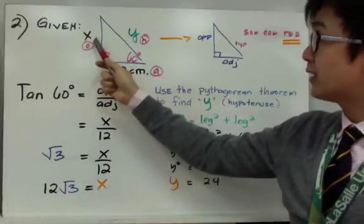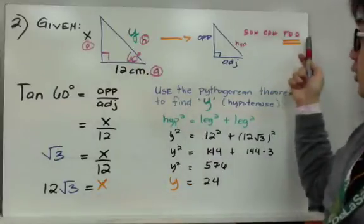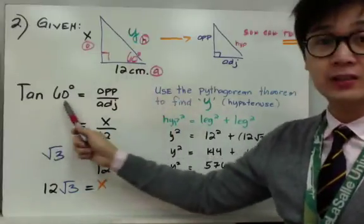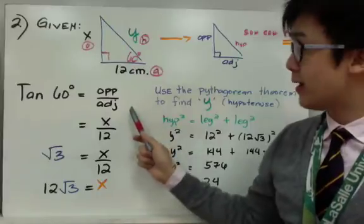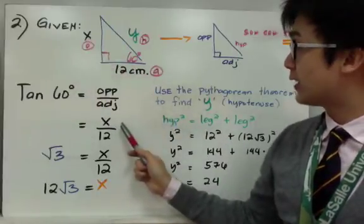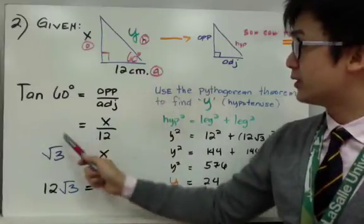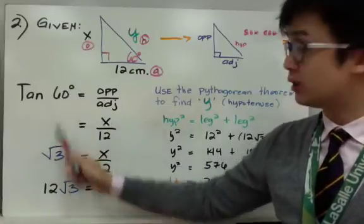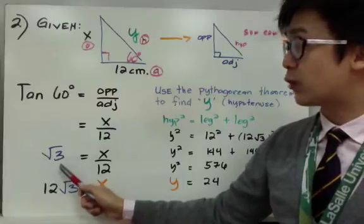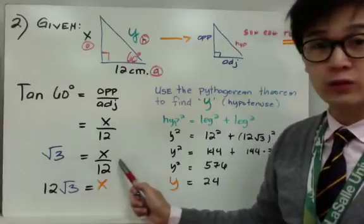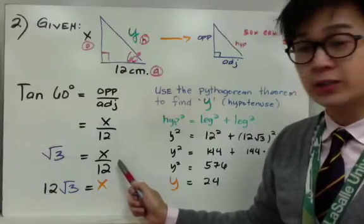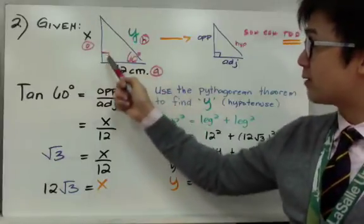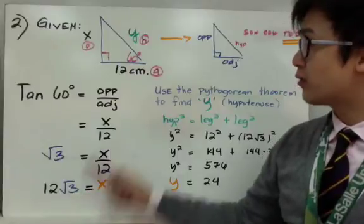I decided to solve for x using tangent. Tangent equals opposite over adjacent, so tangent 60° = x/12. We know that tangent 60° equals √3 from the unit circle, so √3 = x/12. Cross-multiplying gives 12√3 = x. Therefore, my opposite side measures 12√3 centimeters.